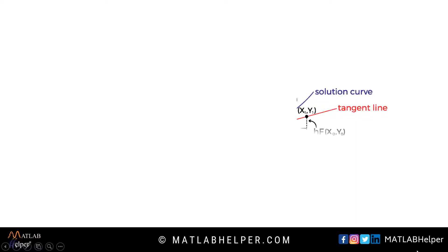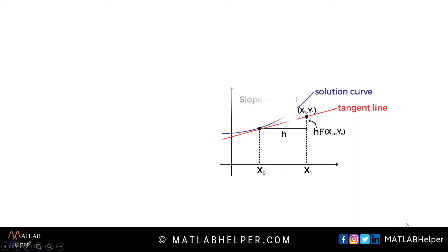Let us first understand what Euler's method does. If you can see the graph in front of you, here we have a blue curve which is the solution curve, and we have an initial point x0 and y0 on that curve.